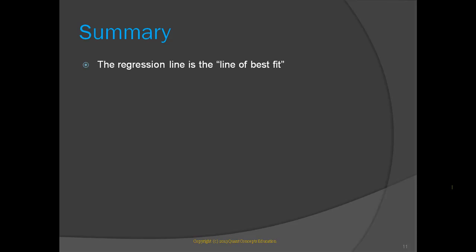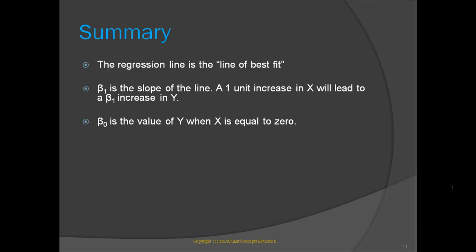The regression line is simply the line of best fit. It is the line that best represents the general trend or relationship in the data. Beta 1 is the slope of the regression line. This is simply the gradient of the line, rise over run. It is interpreted as follows. A 1 unit increase in the x variable will lead to a beta 1 unit increase in the y variable. Beta 0 is the value of the y variable when x is equal to 0. In our example today, it is the expected wage when an individual has 0 education.